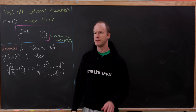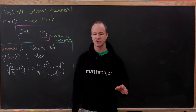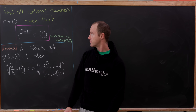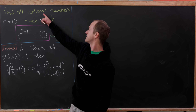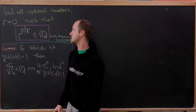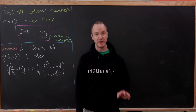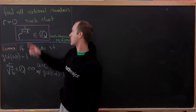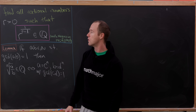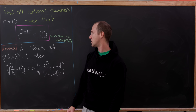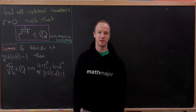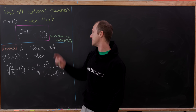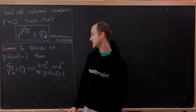Today we've got a nice problem about when powers of rational numbers are also rational numbers. We'd like to find all rational numbers r which are bigger than 0 such that r to the power 1 over r minus 1 is also rational. This comes from a 1995 issue of the Math Magazine.